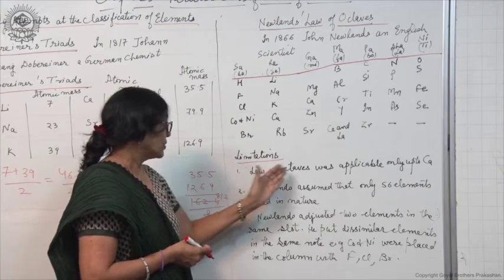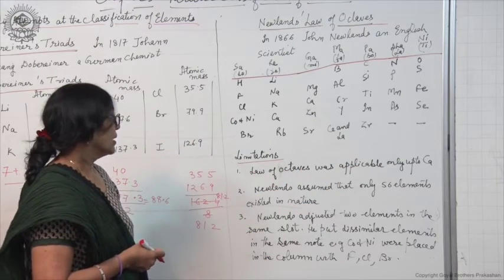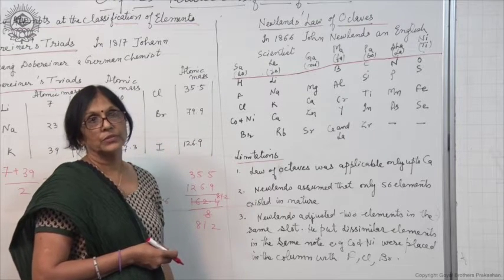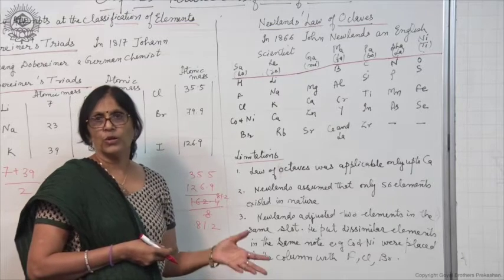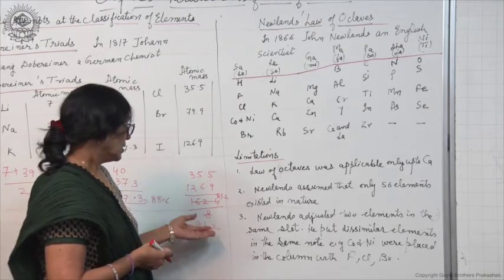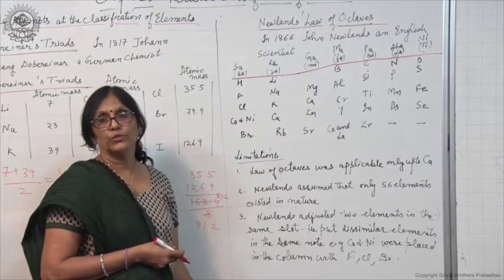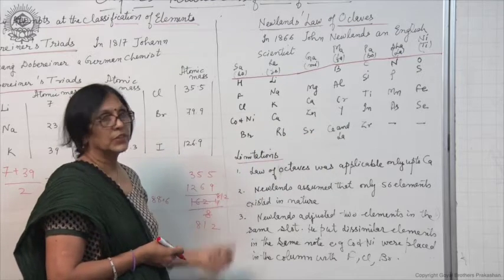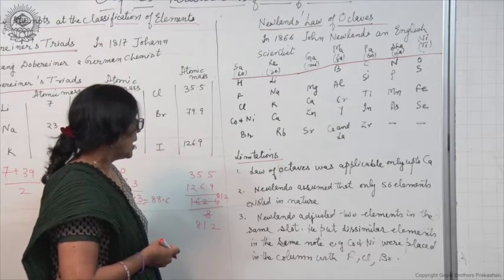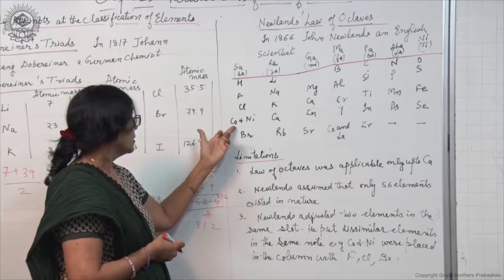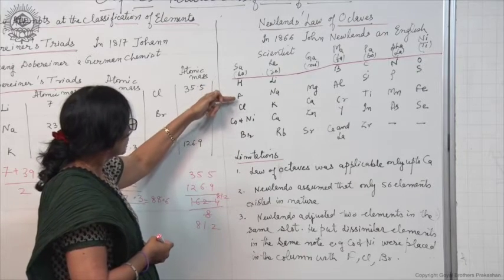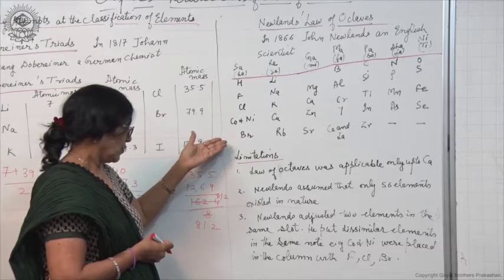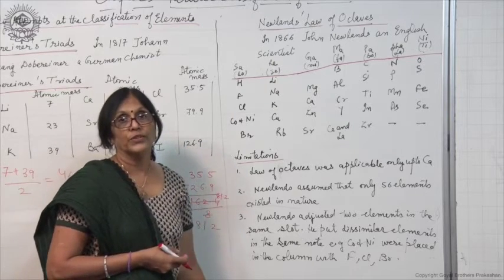It was applicable only up to calcium, and later it did not follow the rule. Newlands assumed that only 56 elements exist in nature and thought no more elements would be discovered. Also, to fit elements into the table, he adjusted two elements at some places. For example, cobalt and nickel were placed along with fluorine, chlorine, and bromine, which are totally different in properties. Because of these anomalies, Newlands' Law of Octaves was also rejected.